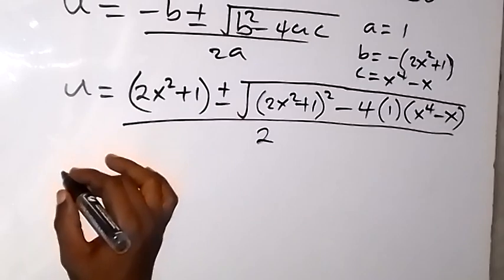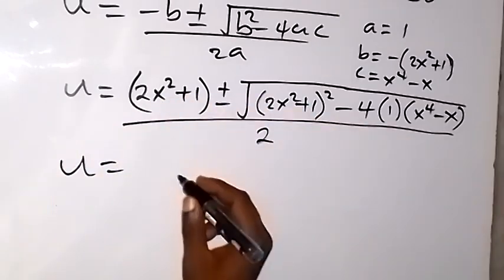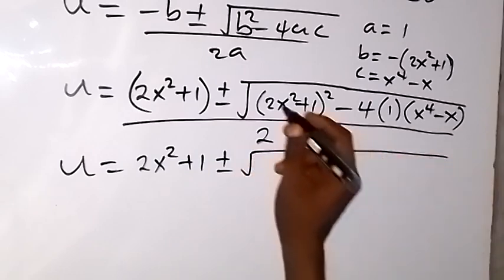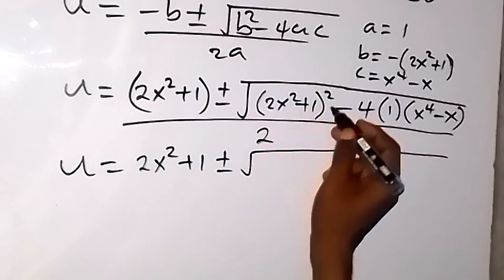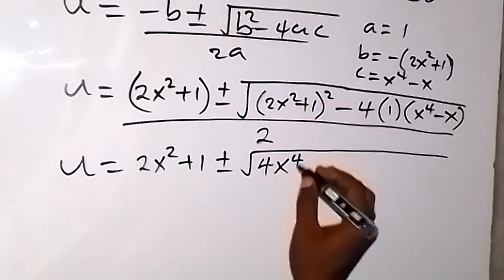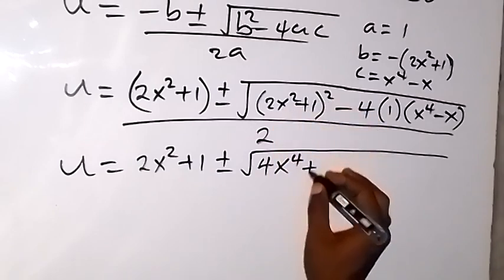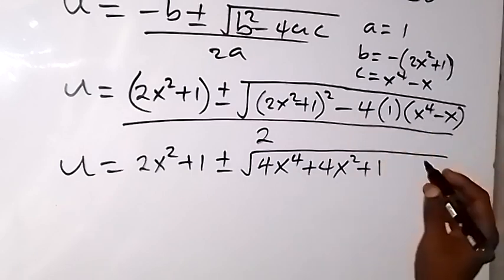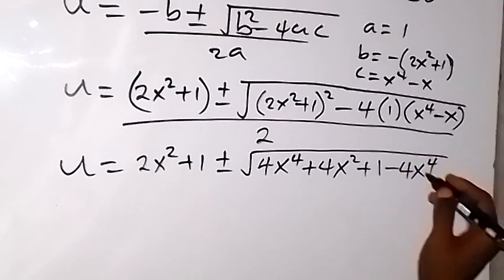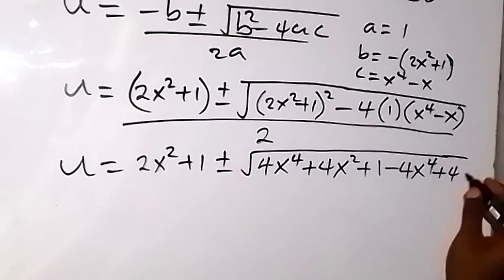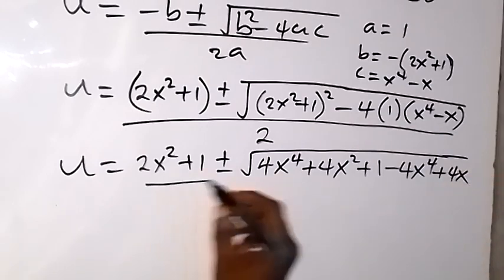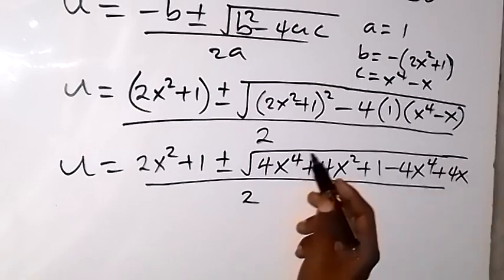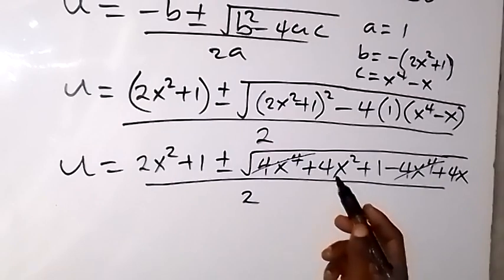Simplifying inside the square root: expanding (2x squared plus 1) squared gives 4x to the 4th plus 4x squared plus 1. Then minus 4 times (x to the 4th minus x) gives minus 4x to the 4th plus 4x. The 4x to the 4th terms cancel each other, leaving 4x squared plus 4x plus 1.